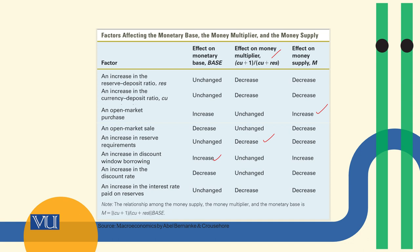An increasing reserves requirement: we discussed that this is also a tool through which the central bank controls money supply; as a result, the value of the money multiplier decreases and money supply falls. An increase in discount window borrowing will increase the monetary base and increase the money supply. An increase in the discount rate will cause a decrease in the monetary base and money supply will decrease. An increase in the interest rate on reserves will change the multiplier and will change the money supply.